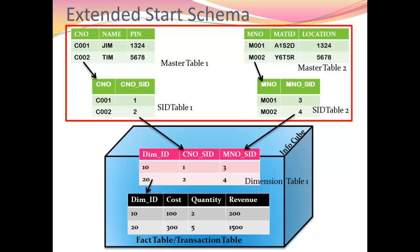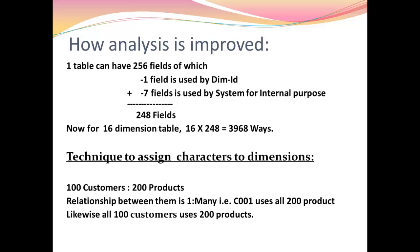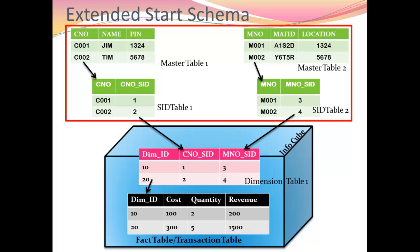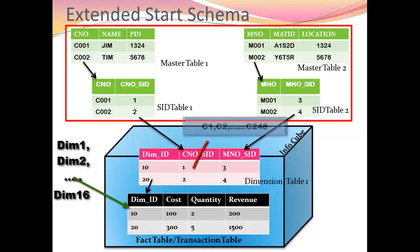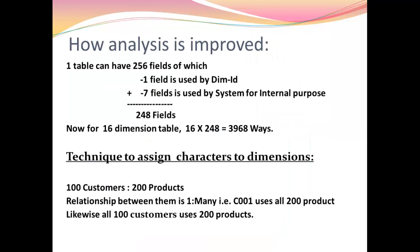Now let's see how dimension tables improve analysis. One table can have a maximum of 256 fields, of which 1 is used by the dimension ID and the remaining 7 are used by the system for internal purposes, leaving us with 248 fields per dimension table. Since we have 16 dimension tables, each holding 248 characteristics, 16 × 248 gives us 3,968 — which is very near to 4,000. This is how we are able to analyze a particular transaction or record in nearly 4,000 ways.